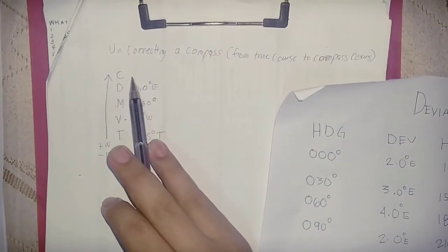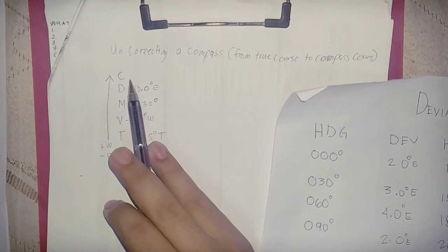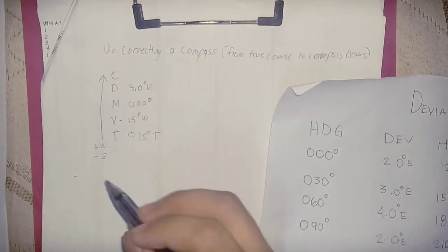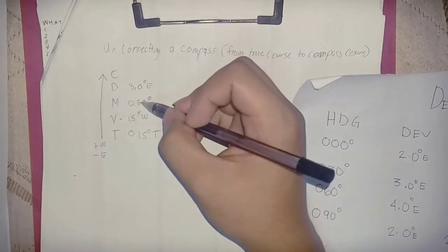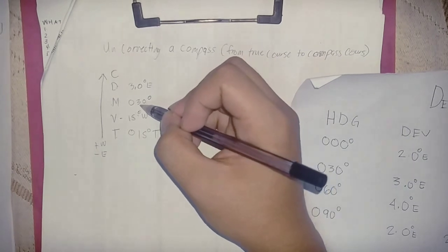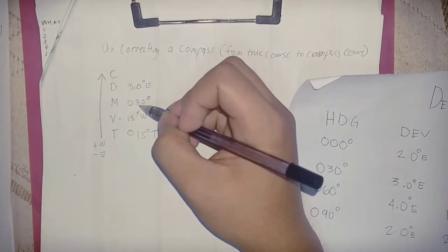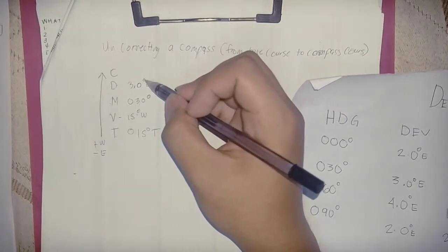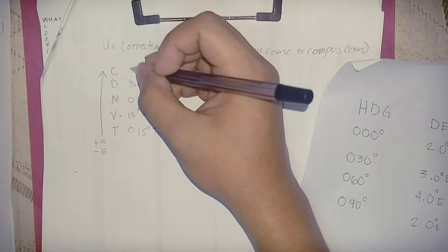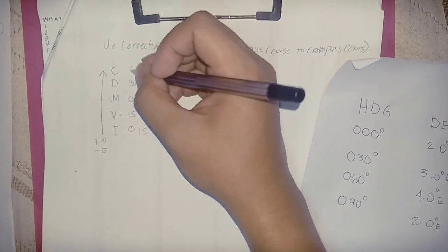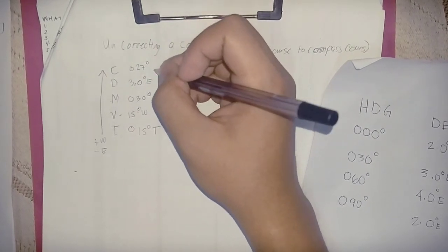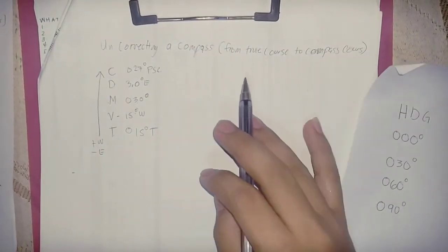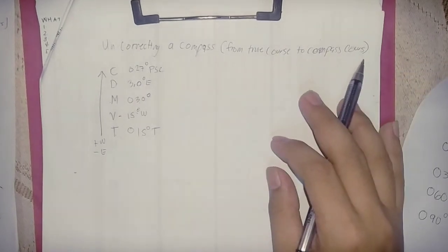To get our compass course, we subtract the deviation from the magnetic. So 030 degrees minus 3.0 degrees deviation gives us a compass course of 027 degrees. This is how to solve uncorrecting a compass from true course to compass course.